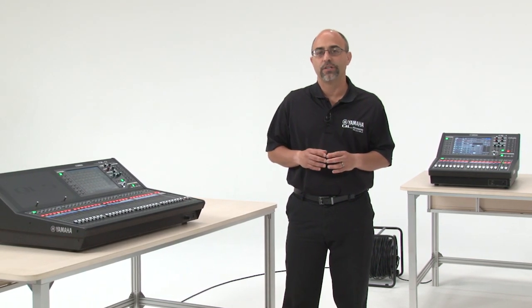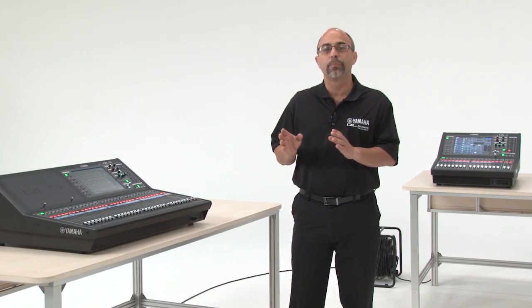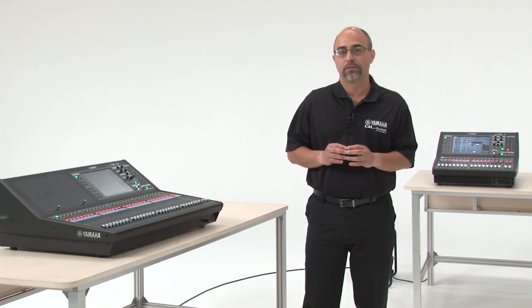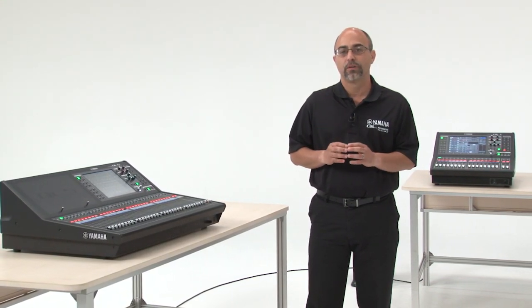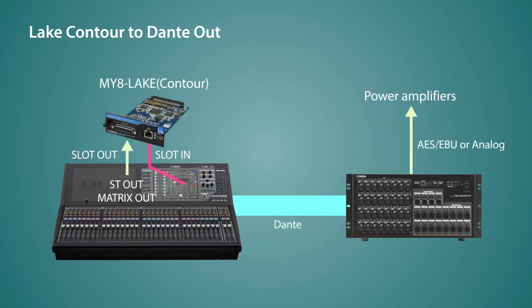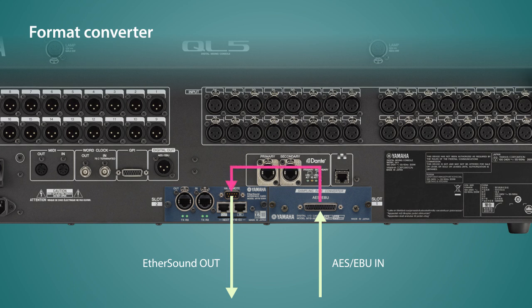The Port-to-Port technology allows us to send any input to any output, bypassing the channel processing. It has multiple uses. For example, I can have a QL at the monitor mix position acting as an I/O device, sending signal to the front of house console. Or I could use it with the NY-Lake card, sending lake processing channels directly to the network. Or it could be used as a format converter via the NY card slots.